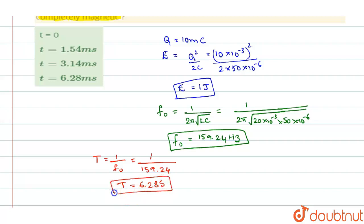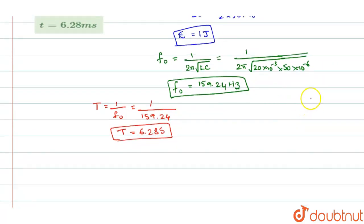So this is the time period of the oscillation. Now, when it will be magnetic and when it will be electric? So whenever electric energy is maximum, magnetic energy will be minimum and vice versa.